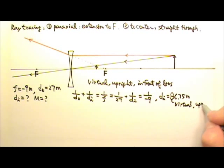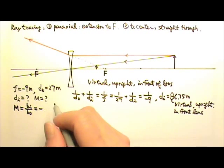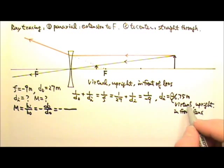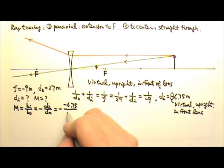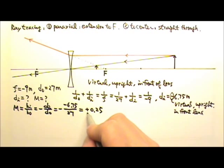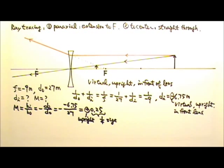And therefore, it must be upright and in front of the lens. And for the magnification, it is the hi over ho. And it is also the negative di over do. So it is negative di is negative 6.75, do is 27. So the magnification is positive 0.25. And the positive means the image is upright, which is consistent with what we have here. And the image is only 1 fourth the size of the object. So the image of that tree would be 1 fourth as tall as the real tree.